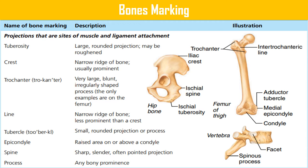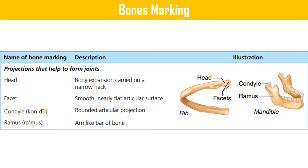You can see all the labeled structures in the illustration. Projections that help to form joints include four types: head, facet, condyle, and ramus. A head is a bony expansion carried on a narrow neck; a facet is a smooth, nearly flat articular surface; a condyle is a rounded articular projection; and a ramus is the arm-like bar of the bone.